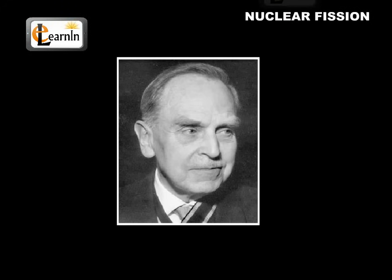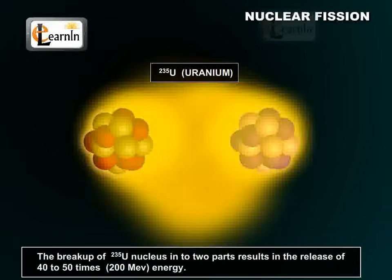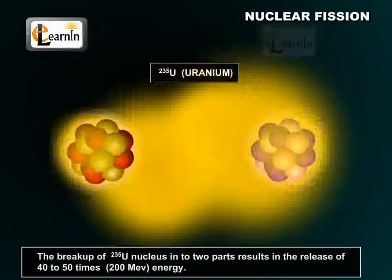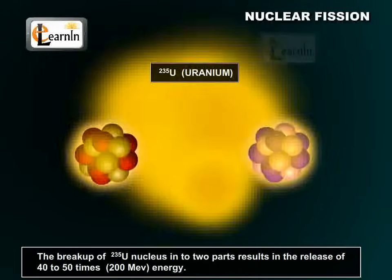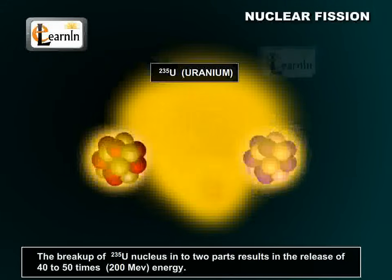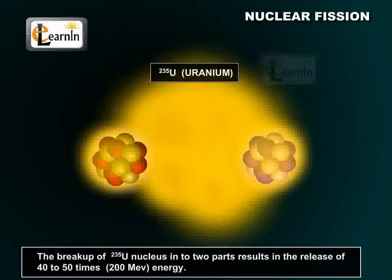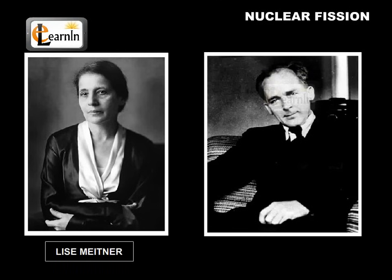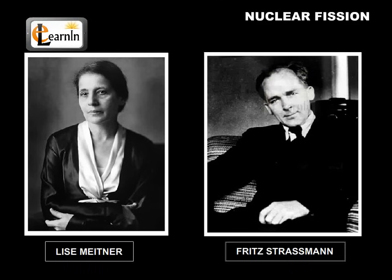In 1939, a German scientist named Otto Hahn discovered that breaking up the nucleus of uranium-235 into two parts emits 200 million times the energy of the neutron which triggered it. He, along with his two colleagues, Lise Meitner and Fritz Strassmann,